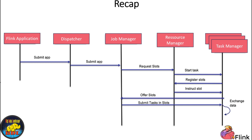A task slot represents a unit of work executed on a CPU. Task Managers are responsible for executing the actual stream processing logic. In a cluster, there are multiple Task Managers, and the number of slots on each Task Manager determines how many tasks it can execute. Task Managers register their slots with the Resource Manager once they are started. The dispatcher exposes an API for submitting applications for execution and hosts the user interface.